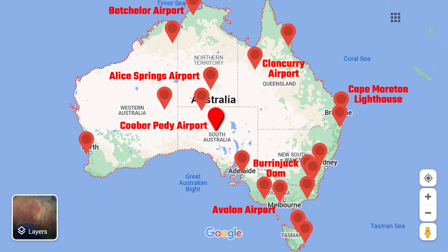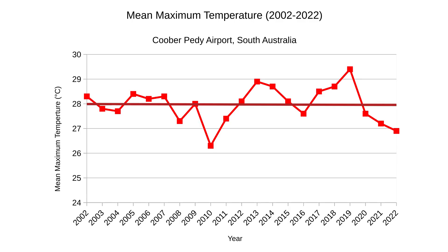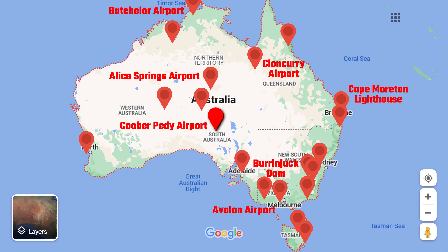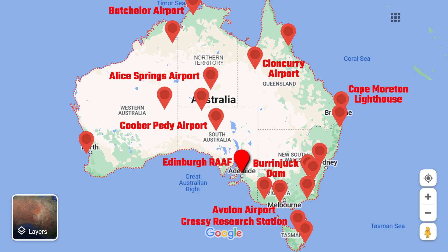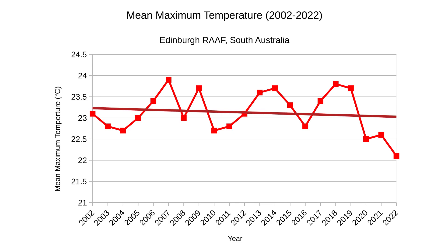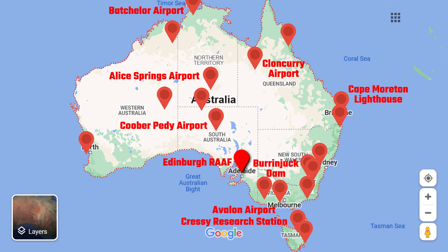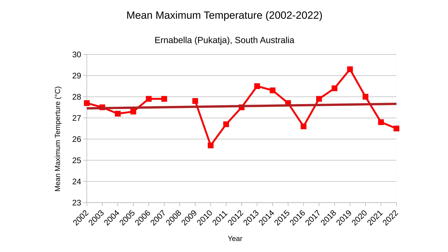Next, let's go to the opal mining town of Coober Pedy in outback South Australia. The Coober Pedy Airport has pretty much averaged 28 degrees Celsius over the last 20 years — nothing to see here. Moving to Cressy Research Station south of Launceston in Tasmania, this would be the first location with a noticeable increase in temperature over the last 20 years, although less than 0.1 of a degree. Heading to the RAAF Base Edinburgh just north of Adelaide — it's experienced falls in mean maximum temperature. Further north, Ernabella, an Aboriginal community in remote South Australia, has experienced a slight increase in temperature over the last 20 years.